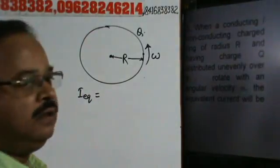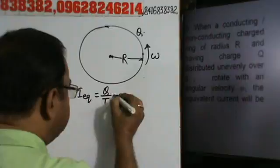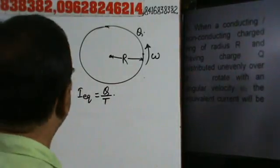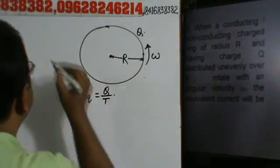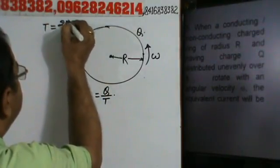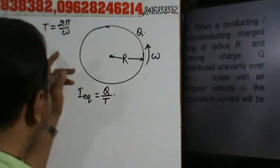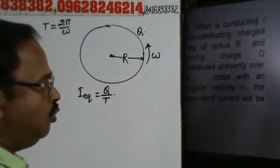Equivalent current will be equal to, again, Q by T. Aor T, ham jahate hai, T khitna ho ga? T will be equal to 2π by omega. Yeah, kyunki omega ho ta hai, 2π by T, the T will be equal to 2π by omega.